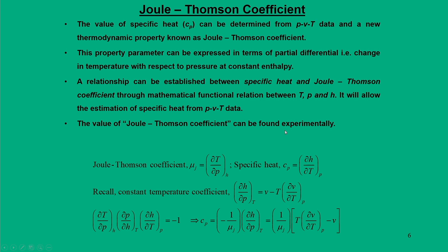Let us see thermodynamically how this parameter is defined. We define the Joule-Thomson coefficient μ_J as the change in temperature with respect to pressure at constant enthalpy: μ_J = (∂T/∂P)_H. This is one such parameter we encountered when deriving mathematical equations involving thermodynamic relations.